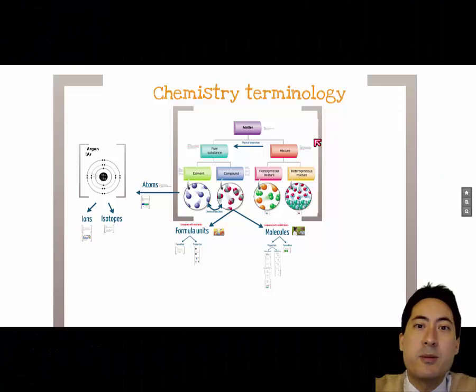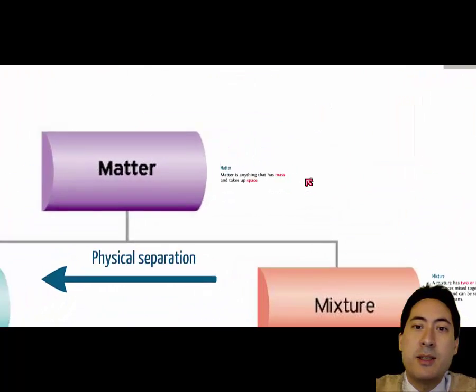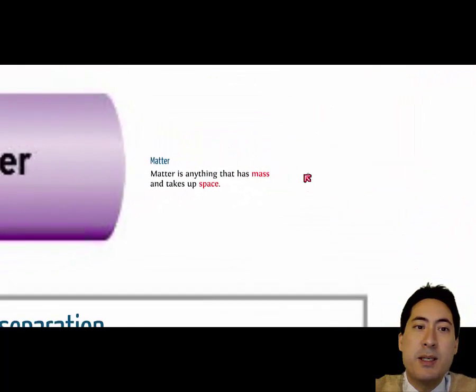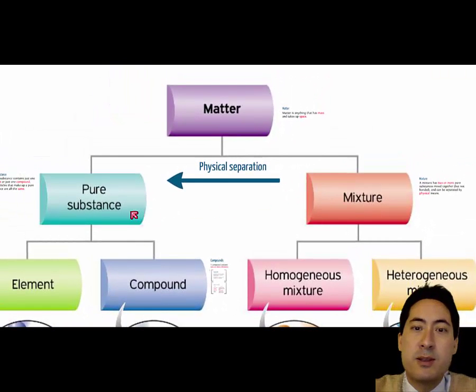Hi, I'm going to go over the chemistry terminology using this presentation here. I'm going to start with matter and then work my way from atom to molecules and compounds. So first of all we have matter. Now matter is anything that has mass, takes up space. And what we usually separate those two into is mixtures and pure substances.